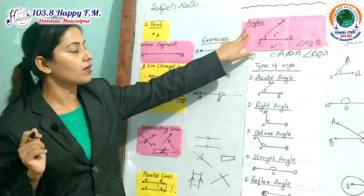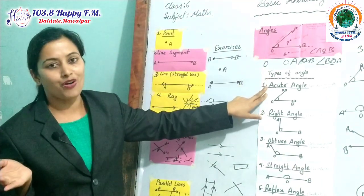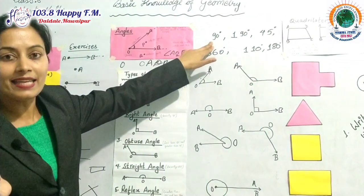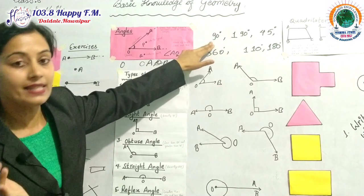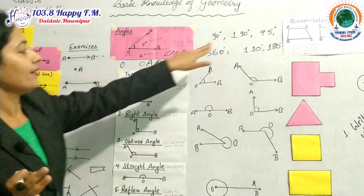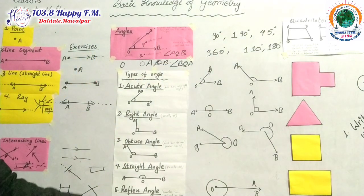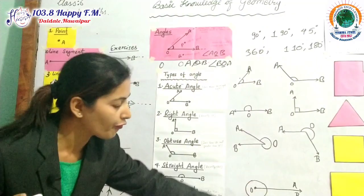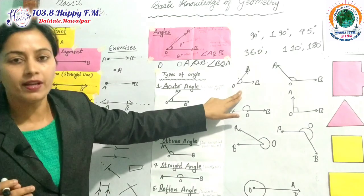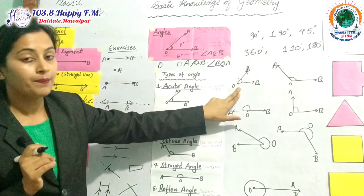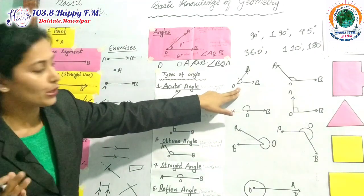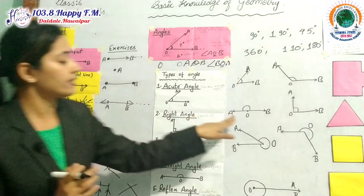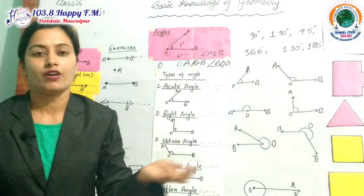Today we discussed angles and types of angles. Here are some exercises on the board. An angle of 90 degrees is a right angle. An angle of 190 degrees is a reflex angle because it is greater than 180. Looking at the figures: this one is less than 90 degrees, so it is an acute angle. This one is greater than 90 degrees — it is an obtuse angle. And this one is a straight line, so it is a straight angle. You can practice these yourself at home.